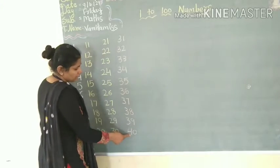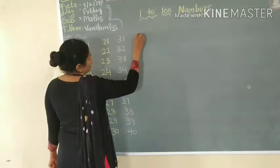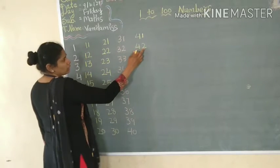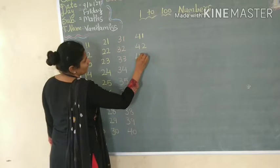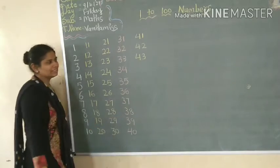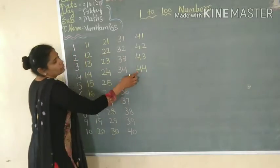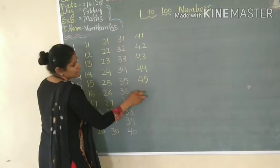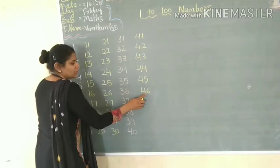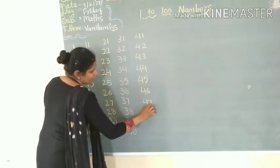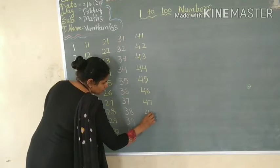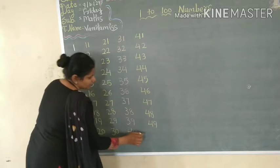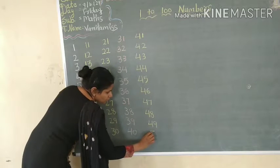After 40 is 41. After 41 is 42. After 42 is 43. And what comes after 43? 44. Then what comes after 44? 45. The next number is 46. After 46 is 47. After 47 is 48, and after 48 is 49. After 49 is 50.